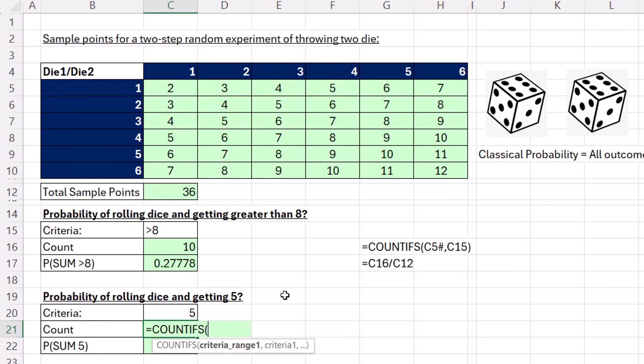For probability of exactly five, no comparative operator, just a number. Here's the whole range, comma, five, enter. Only four, equals up arrow divided by a bunch of up arrows and enter. So the probability is 0.11111.